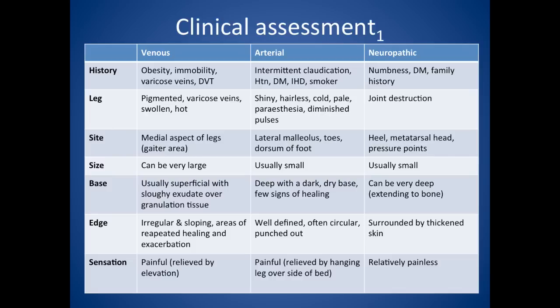Looking at clinical assessment, comparing the three types: in history, venous ulcers might be associated with obesity, immobility, varicose veins, or previous DVT. Arterial ulcers may present with intermittent claudication, hypertension, diabetes, ischaemic heart disease, and smoking. Neuropathic ulcers might have a history of numbness, sensory neuropathy, diabetes, and maybe even a family history of these types of ulcers.